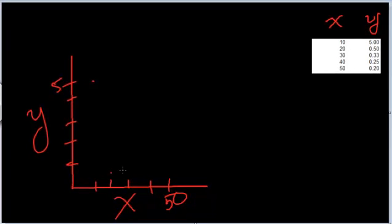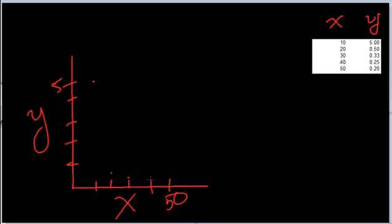Unfortunately, due to having the points where they are at 0.5, 0.33, 0.25, and 0.2, we have to cram them all down here. And we see that the general equation is a hyperbola.